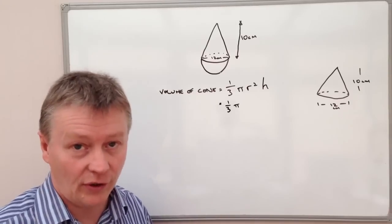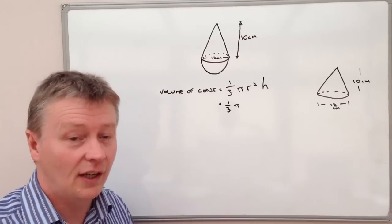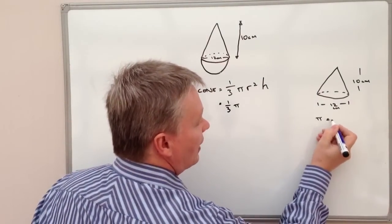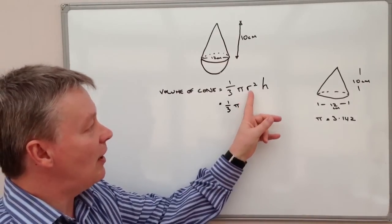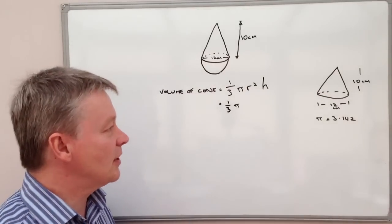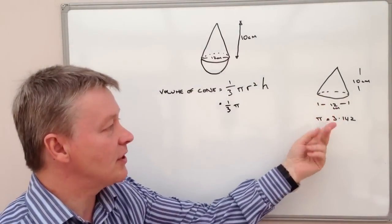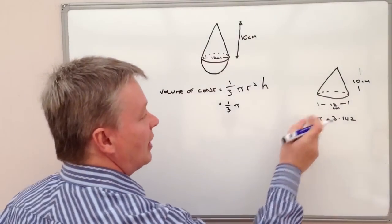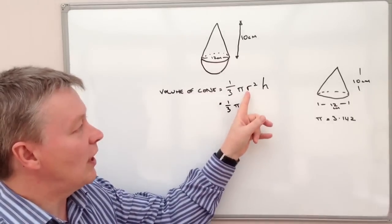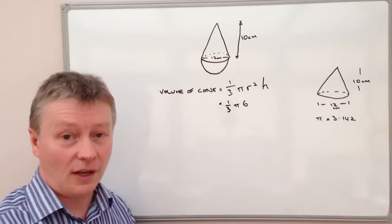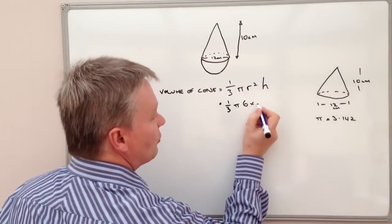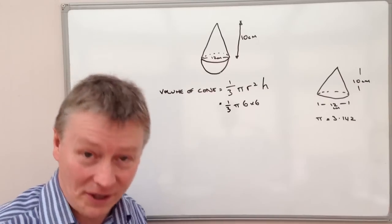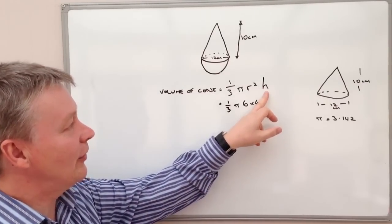For this calculation I'm going to use pi as 3.142. Now for r, you've got to be careful — questions like this tend to give you the diameter of 12 centimeters rather than the radius. The radius is half the diameter, so it's actually 6. Also be aware that it's radius squared, which means 6 times 6, not 2 times 6. I'll write 6 in to remind myself it's 6 times 6.